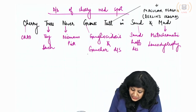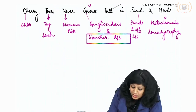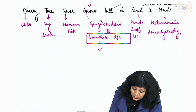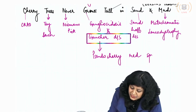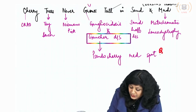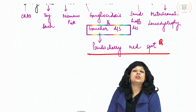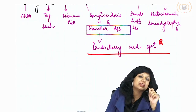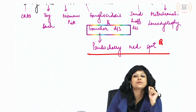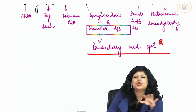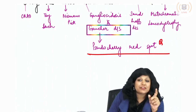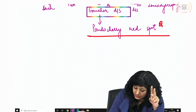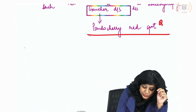Important note: Gaucher's disease actually shows a pseudo cherry red spot. So it is not a true cherry red spot. When deciding which condition to choose, keep in mind that the cherry red spot in Gaucher's disease is not a true cherry red spot.